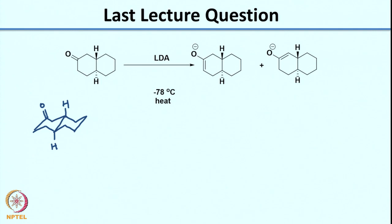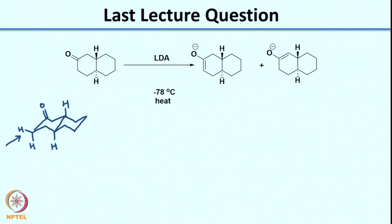When I consider the two positions, one is where I'm looking at the hydrogens away from the ring junction, and the other is where I'm looking at the hydrogens closer to the ring junction. The hydrogens away from the ring junction are easier to deprotonate, especially one of them, because you have absolutely no steric hindrance at that point. So when I do this reaction using a bulky base such as LDA at low temperature, what you see is you get a majority of the kinetically favored product, which is this enolate.